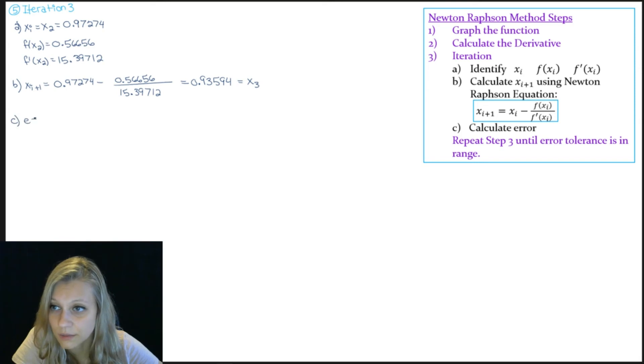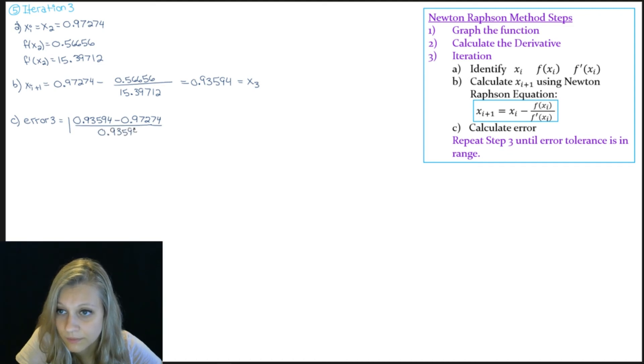And so the last thing I need to do is calculate my error. So my current estimate is 0.93594. My previous estimate was 0.97274. And I divide all of that by my most current estimate. And multiply by 100. And that gives me 3.9%.